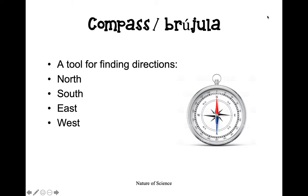Next, we also have a compass. A compass is a tool used for finding directions — the four directions being north, south, east, and west. Compasses can be used in times where you may be lost or you need to find the direction of something. Name a scenario in which you may need a compass.